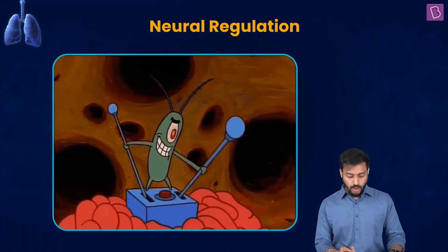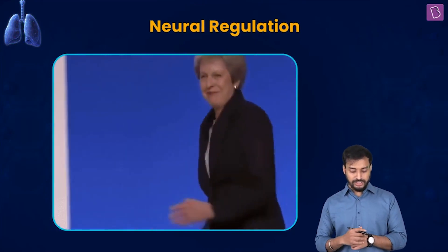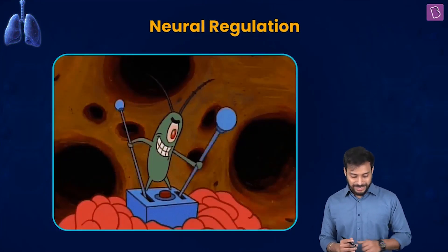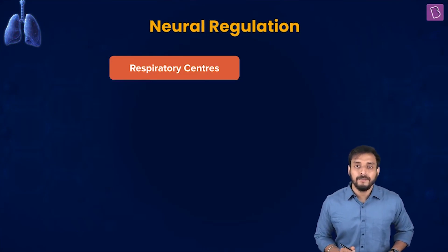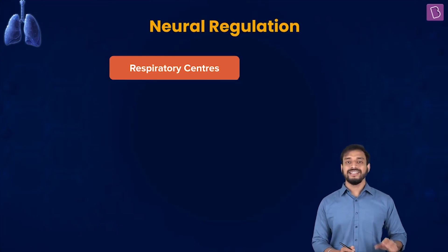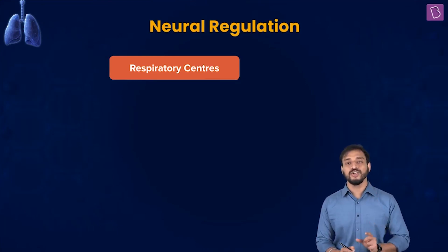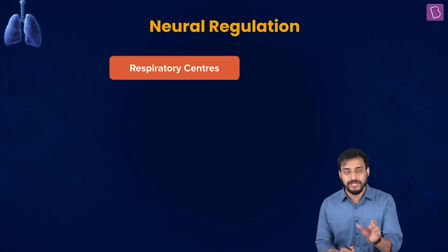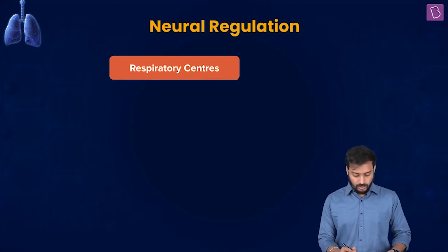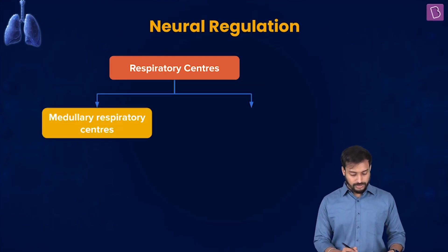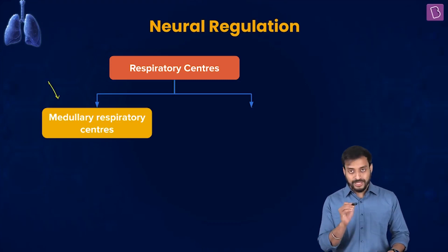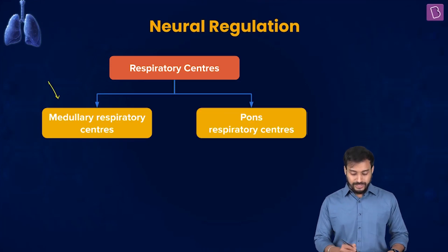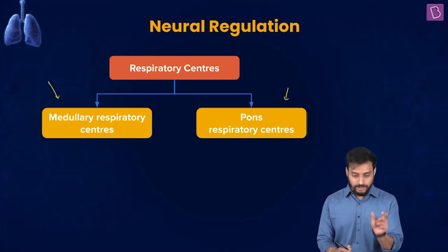Let's talk about the neural regulation — how is this regulated? There are some centers called the respiratory center. There are control centers which are referred to as the respiratory center. They are generally comprised of the medullary respiratory centers and the pons respiratory center.